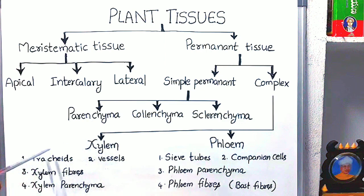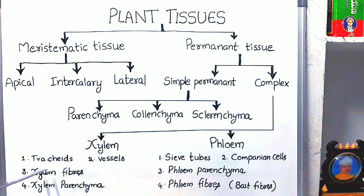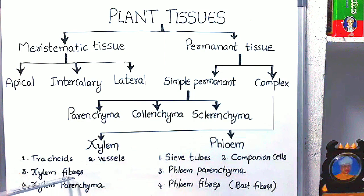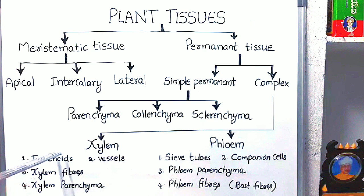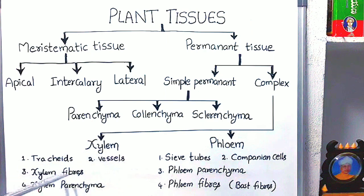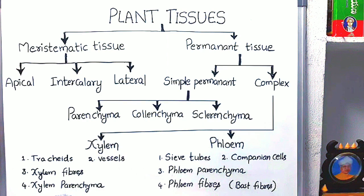Of the four xylem elements, the first three — tracheids, vessels, and xylem fibers — are dead tissues consisting of dead cells. Whereas xylem parenchyma consists of living cells and is a living tissue.